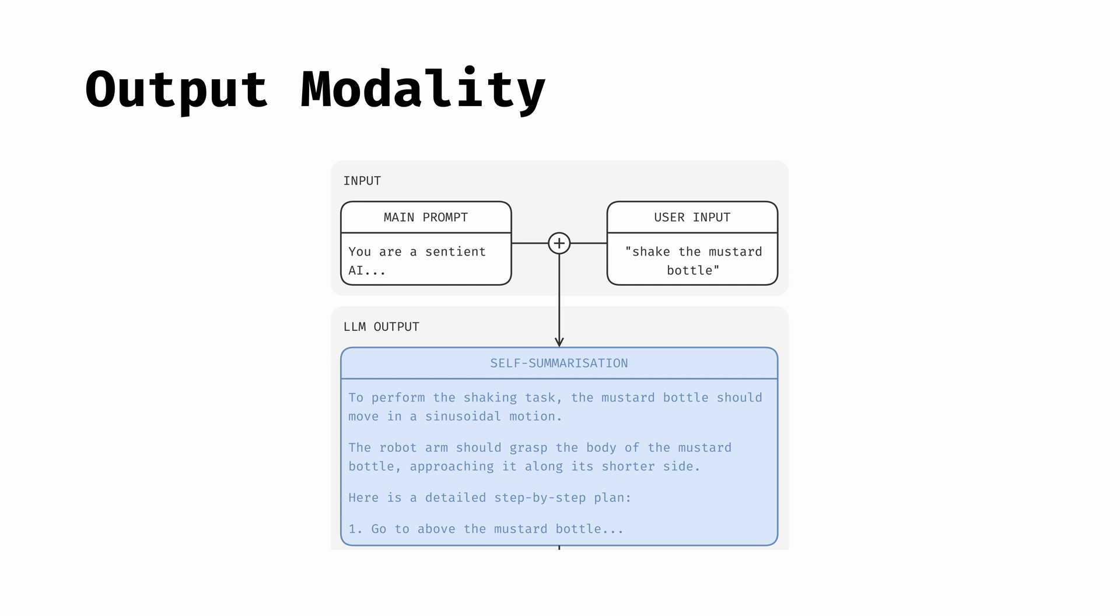As additional experiments, we first conduct ablation studies to explore the optimal way for the LLM to output the sequence of end-effector poses. As before, given the full main prompt and the user input command, the LLM first outputs a high-level natural language self-summarization of the trajectory plan.